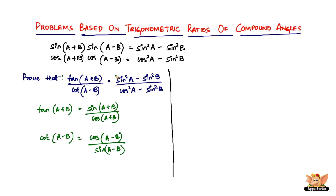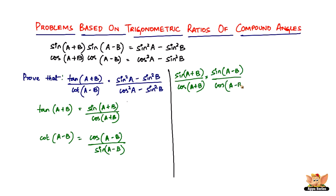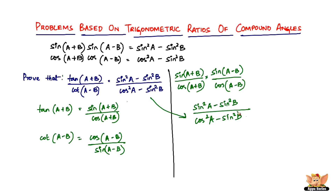Substituting, it's going to be sine(a+b) divided by cos(a+b), in place of tan(a+b), divided by that fraction. We write it as multiplication by the reciprocal, giving sine(a+b) times sine(a-b) over cos(a+b) times cos(a-b). Sine(a+b)·sine(a-b) is sin²a minus sin²b, and cos(a+b)·cos(a-b) is cos²a minus sin²b. That's exactly what we wanted, and therefore we proved it. It's a pretty simple problem — all you had to do was substitute the formula.